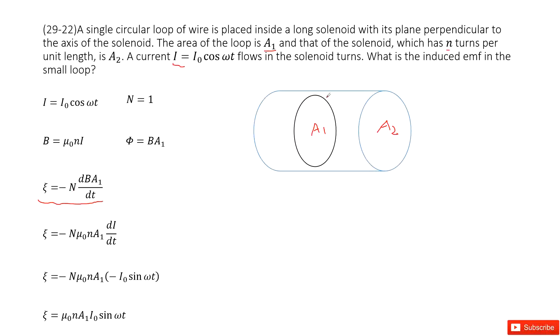So n is how many turns for this small loop? One turn. And then this Φ is the magnetic flux in this small loop. So use the magnetic field B times A₁. As we can see, A₁ is given, it's constant.